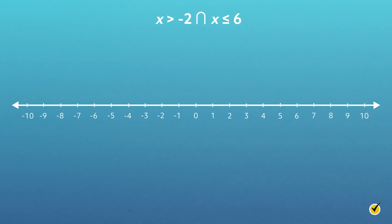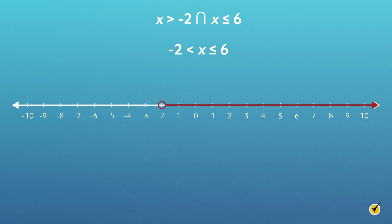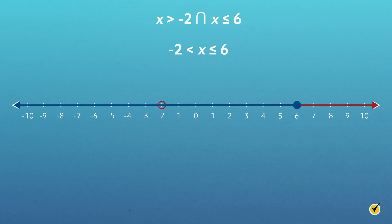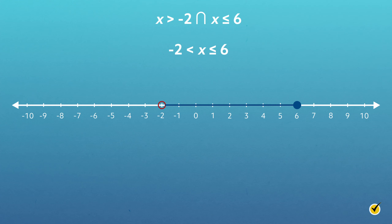Consider the compound inequality x is greater than negative 2 and x is less than or equal to 6, which can also be written as negative 2 is less than x is less than or equal to 6. Since these two inequalities are connected by AND, the graph needs to reflect all solutions for x that are greater than negative 2 and less than or equal to 6. There is an open circle at negative 2 with a line extending to its right, and a closed circle at 6 with a line extending to its left. The graph shows only where both solutions overlap. The solution set is expressed with parentheses indicating that negative 2 is not part of the solution set, and a bracket meaning that 6 is part of the solution set.